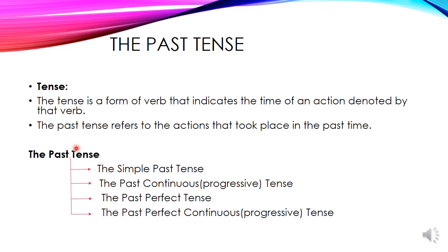The past tense is divided into four subdivisions: number 1, the simple past tense; number 2, the past continuous or progressive tense; number 3, the past perfect tense; and number 4, the past perfect continuous or progressive tense. These are the four subdivisions of the past tense.